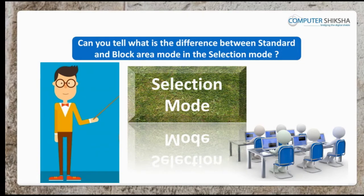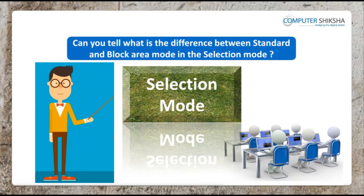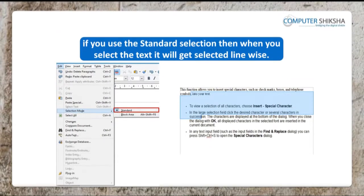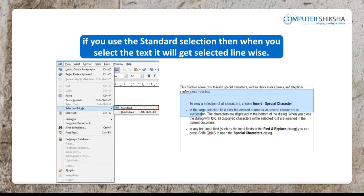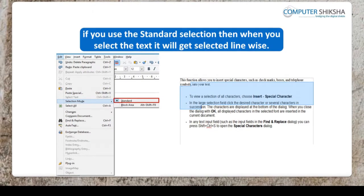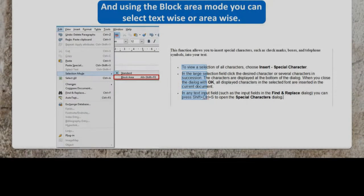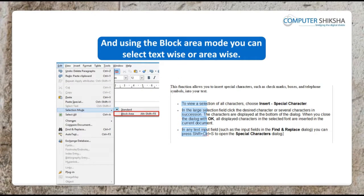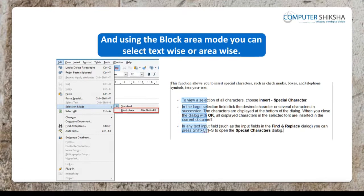Can you tell what is the difference between Standard and Block Area mode in the Selection mode? While working with the Selection mode, if you use the Standard selection, then when you select the text, it will get selected line-wise. And using the Blocked Area mode, you can select text-wise or area-wise.